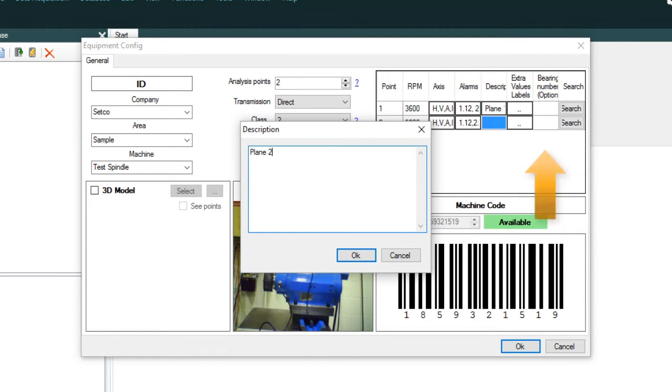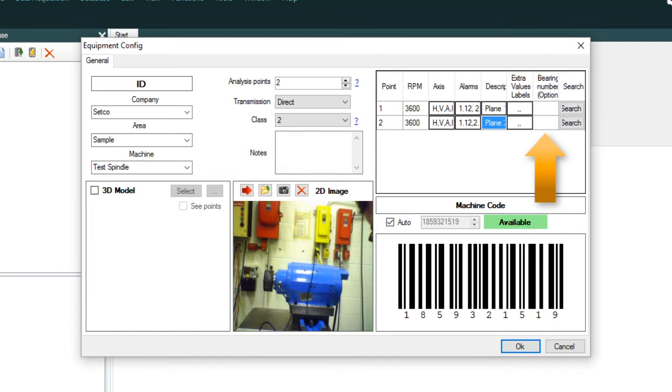There is an option to select the type of bearing that is in the equipment. Bearing information is not required to be entered and does not impede data collection. There is also an option where a barcode can be manually entered if the auto-assigned number is not desired. To do this, uncheck the auto box and enter a unique identification number. The created barcode can be printed and used by the reader button to load equipment data automatically.